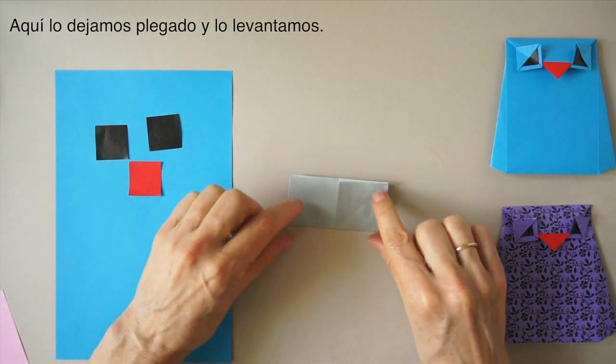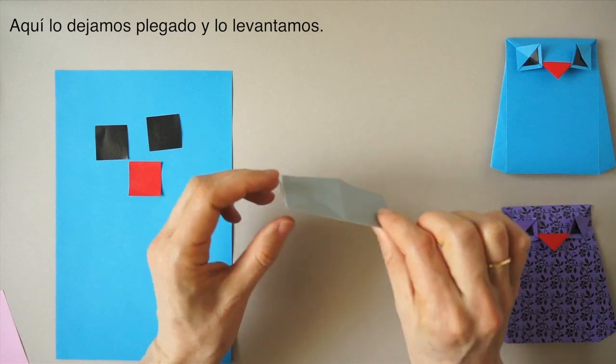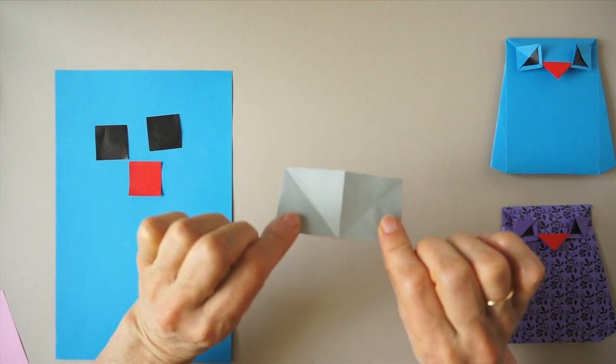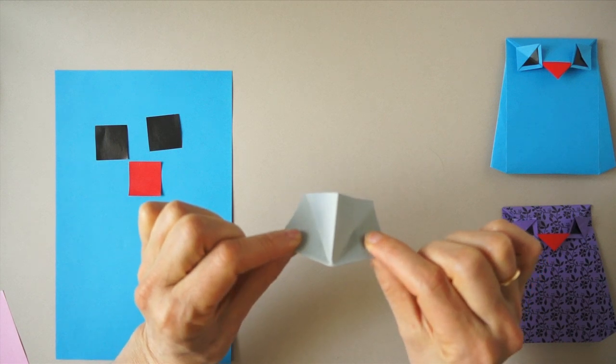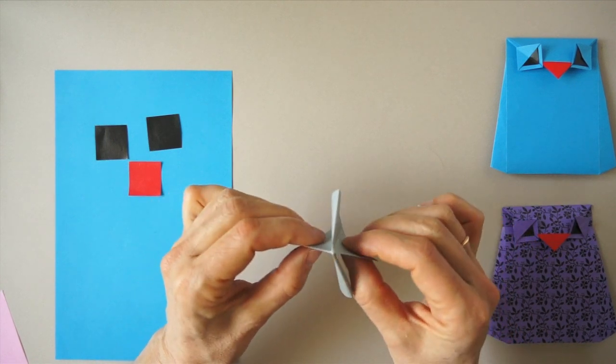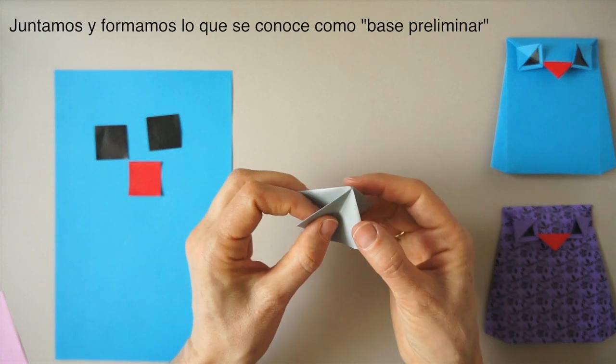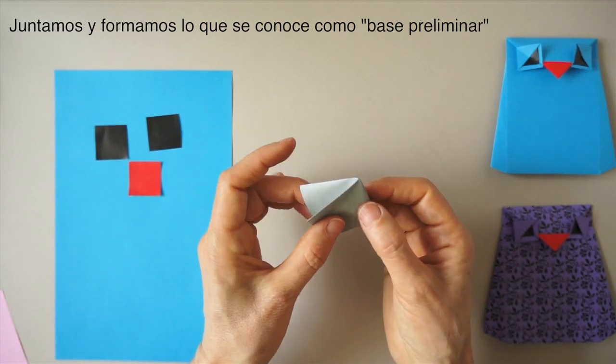We turn it over and make the central lines that are parallel to the edge. Once here we leave it folded, we pick it up by the folded edge and we bring the two flaps together.